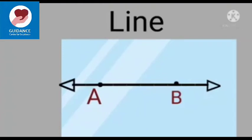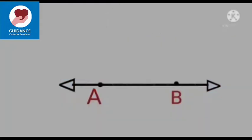The arrowheads on both sides indicate that the line can be extended on either side. A line has no endpoints, so it has no definite length.